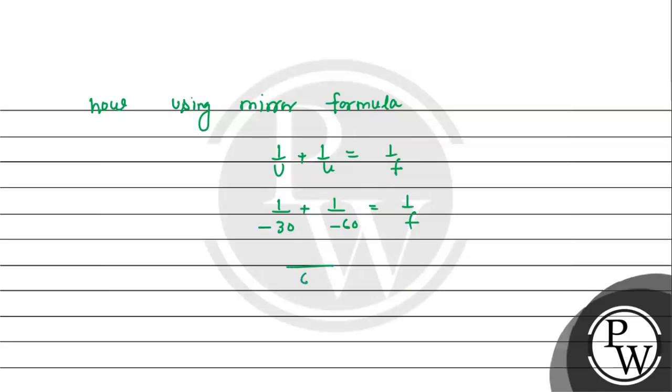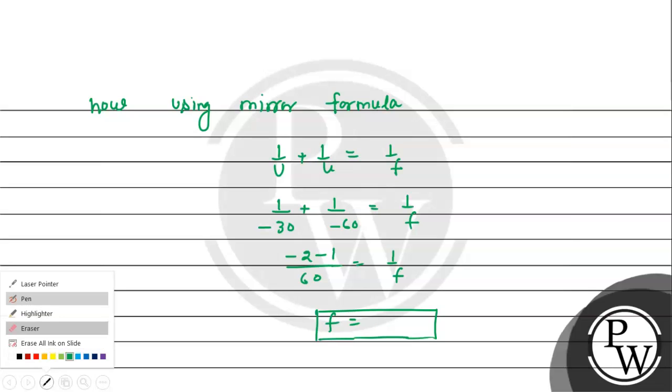Taking LCM of 60: minus 2 minus 1 equals minus 3. Equals 1 upon F. So F equals minus 20 cm. The answer is minus 20 cm.